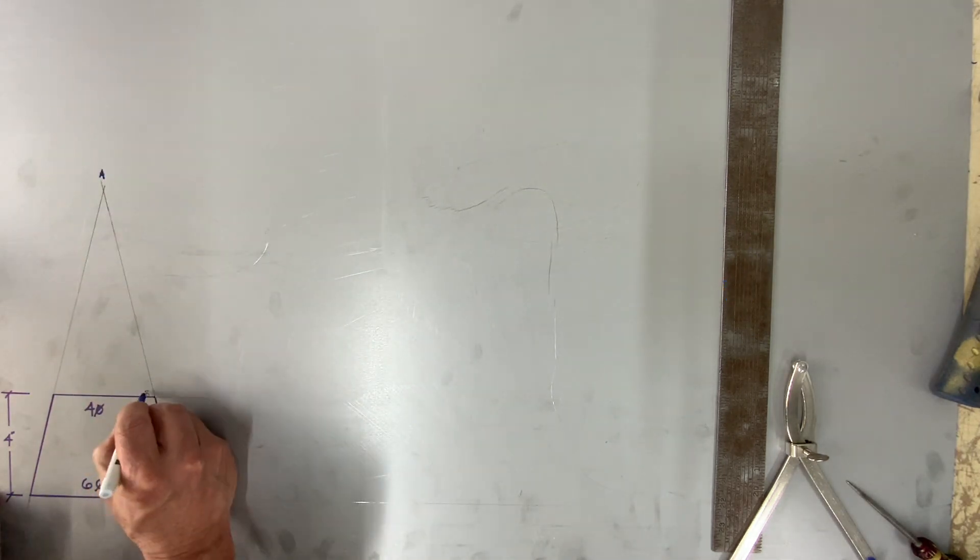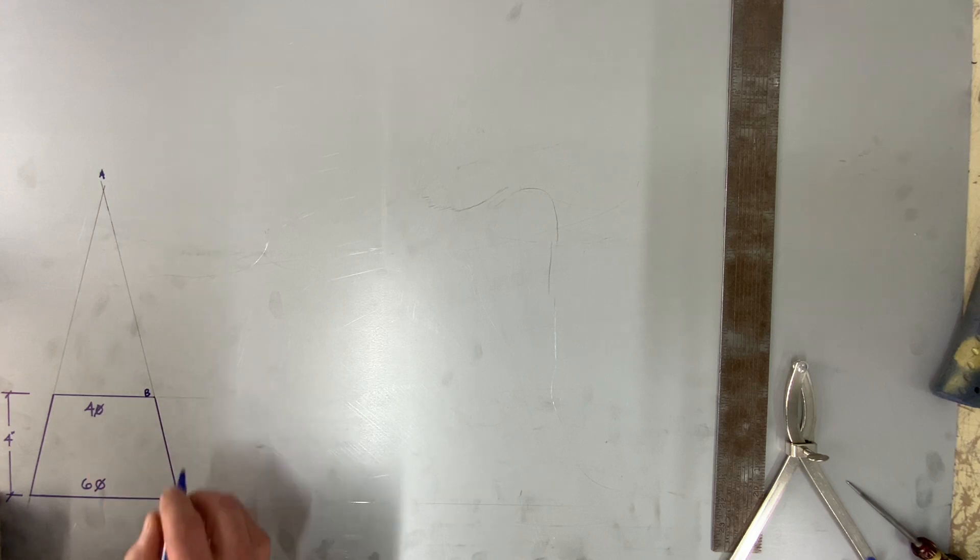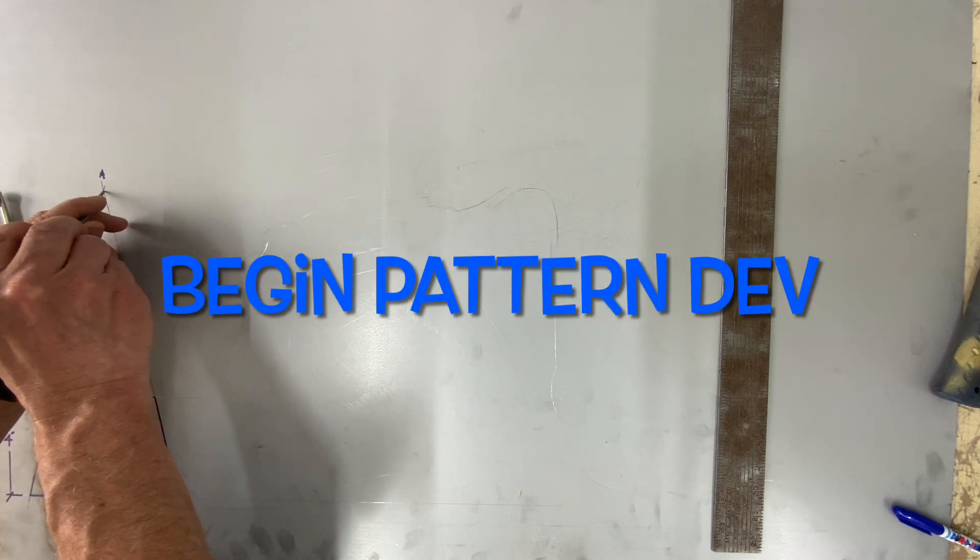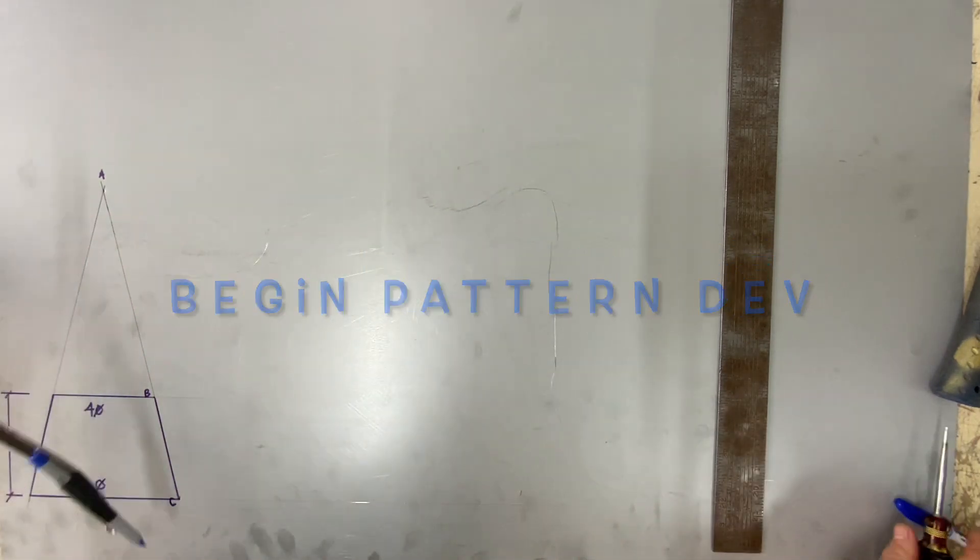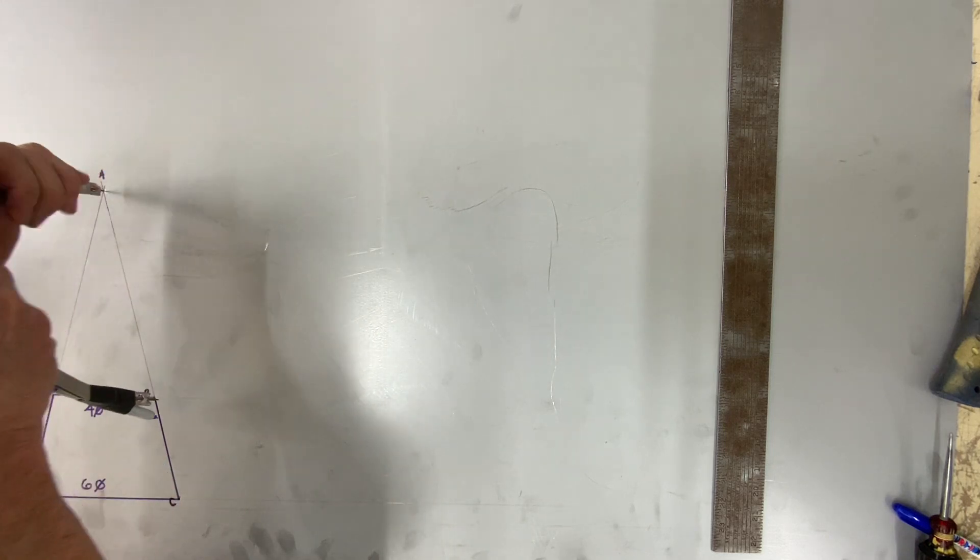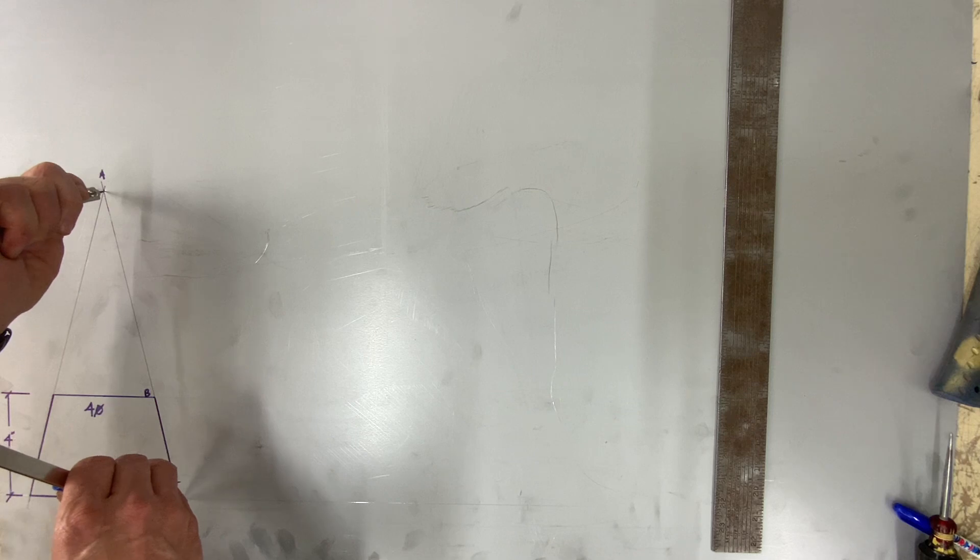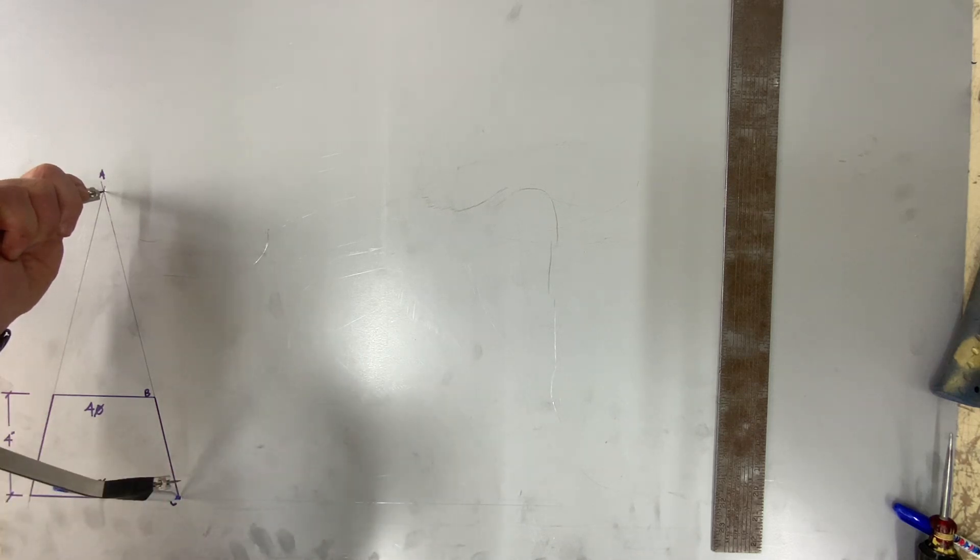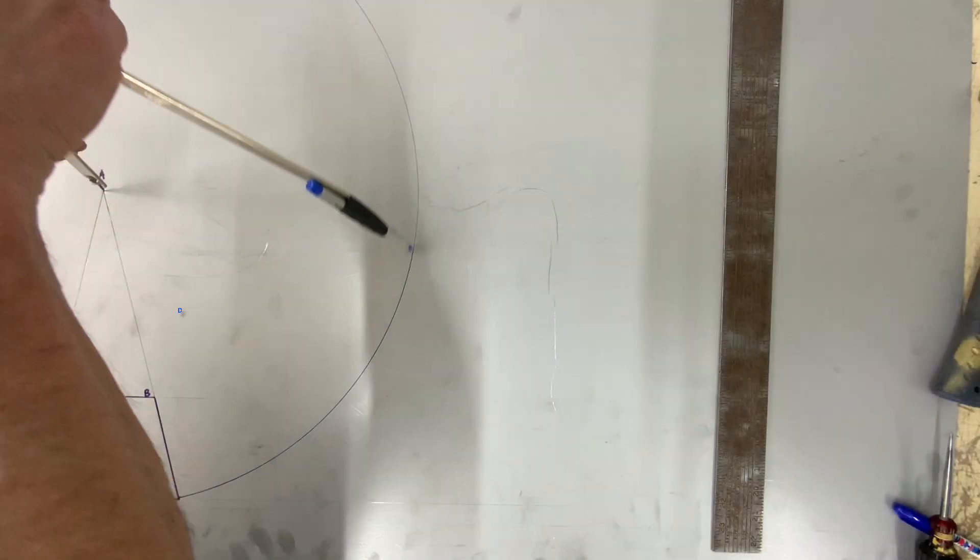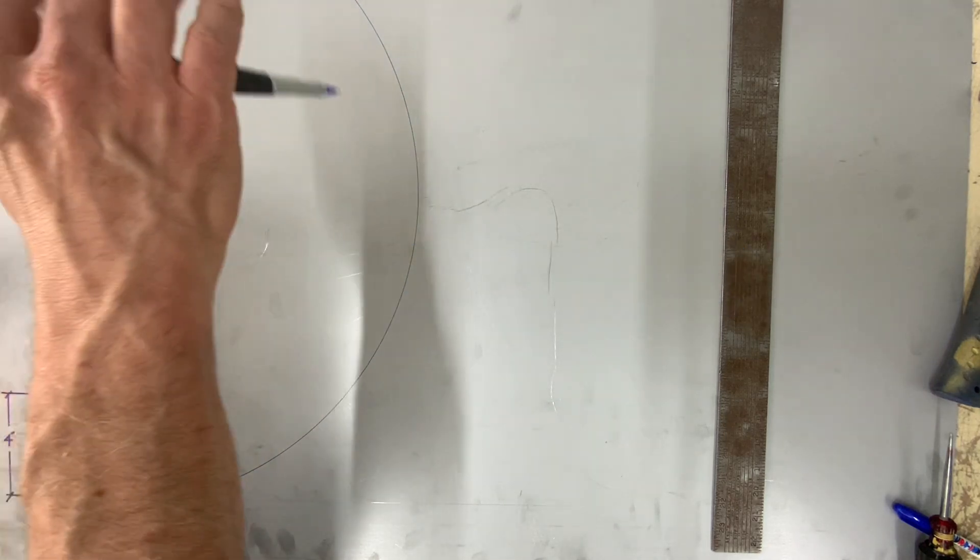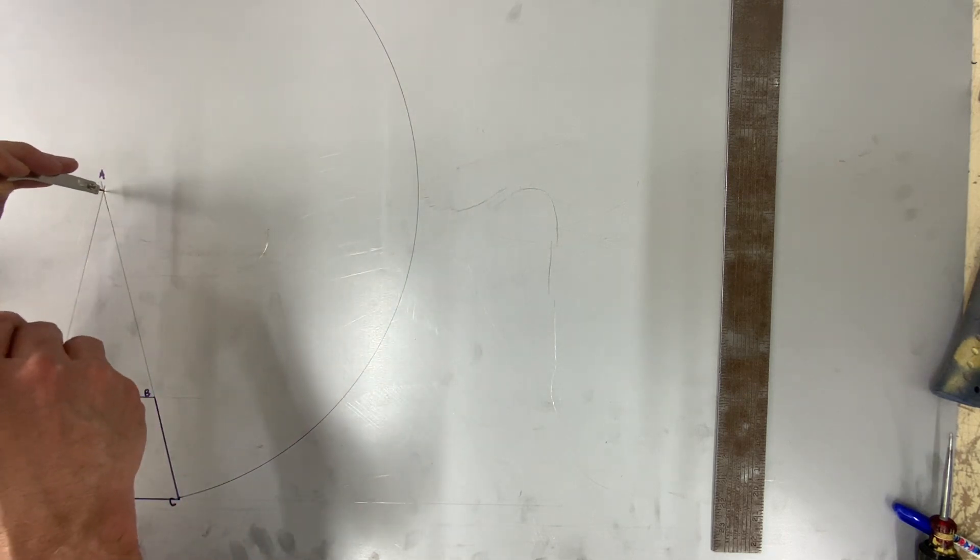You have now completed your front elevation view. Once that is complete, we can start laying out the pattern. Set your compass from A to C and strike an arc outward to establish the baseline. Do the same with A to B.